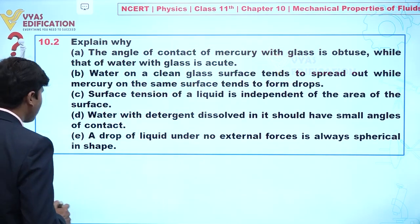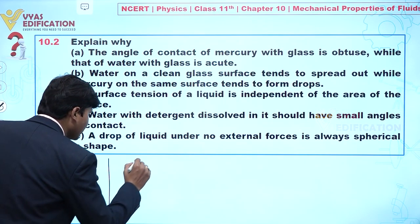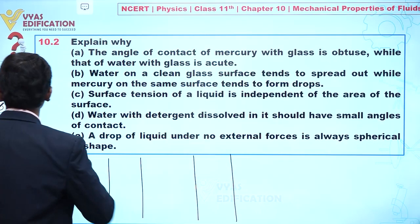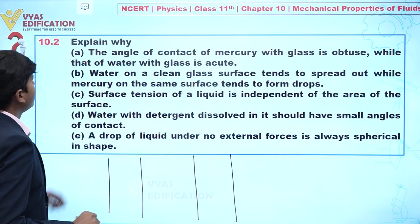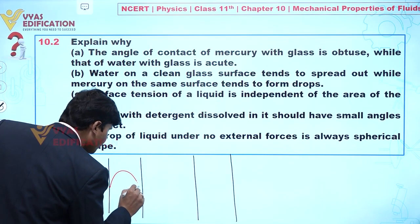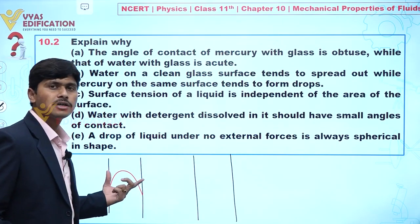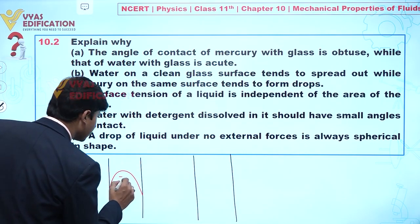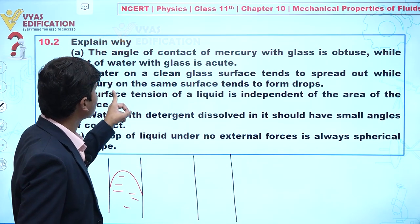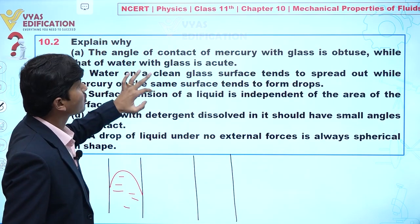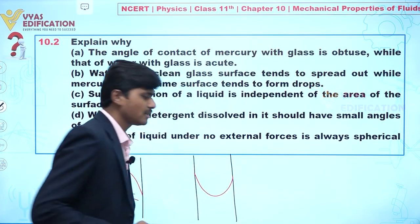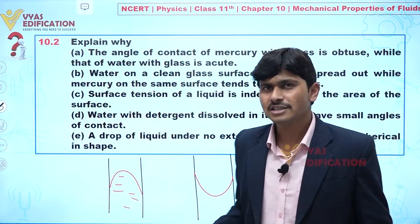Let's take a capillary tube as an example. If we fill it with mercury, we will find the shape of the mercury meniscus looks like this — it curves upward at the edges. But if we are talking about water on glass, the meniscus will be shaped like this — it curves downward. So why does this happen? This is very important.